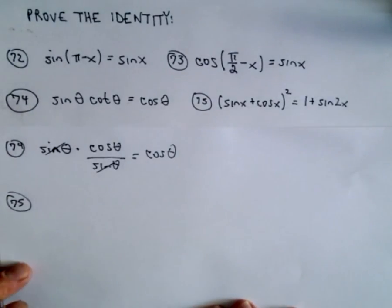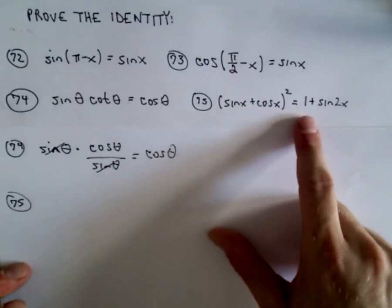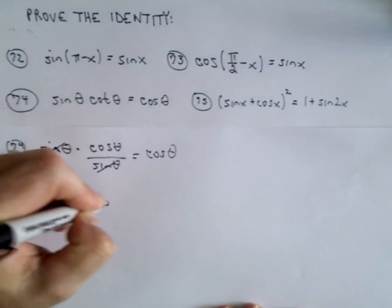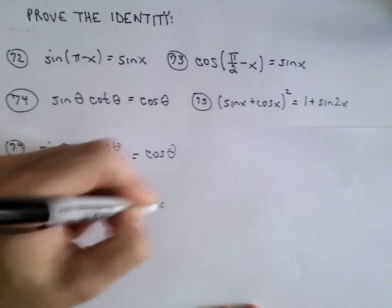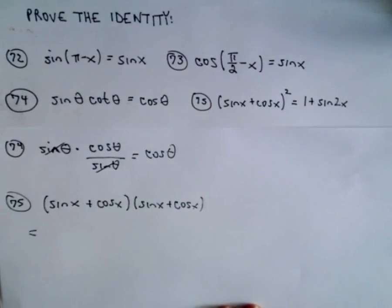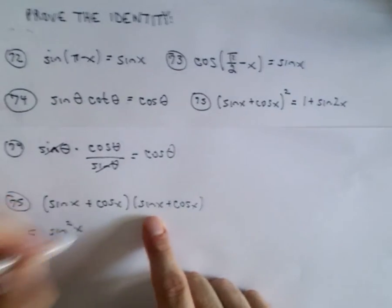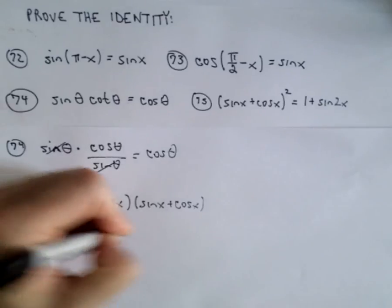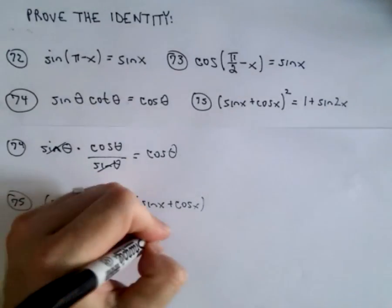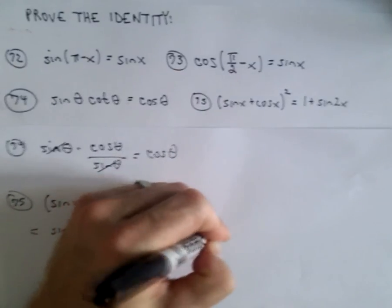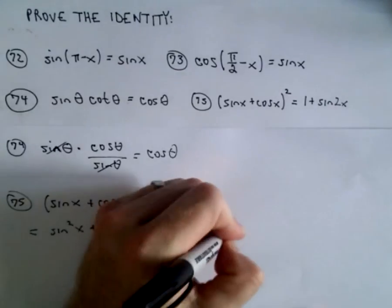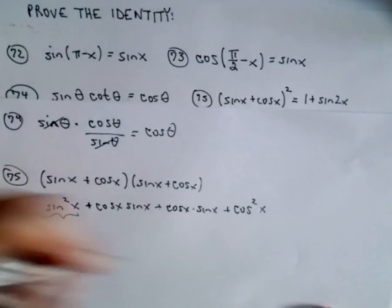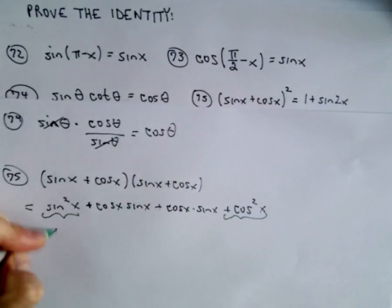So again, nothing too crazy. For 75 we have (sin x + cos x)². We want to show that equals 1 + sin 2x. Well, we can expand the left side. We've got sin x plus cos x, we'll multiply that by sin x plus cos x. So if we distribute, we'll have sin times sin which is going to be sin² x. We'll get a sin x times cos x, I'm going to write that as cos times sin, and then on the inside again, we're going to get another cos multiplied by sin, and then we have cos times cos which is going to give us cos² x.